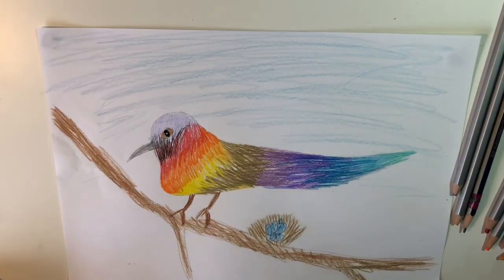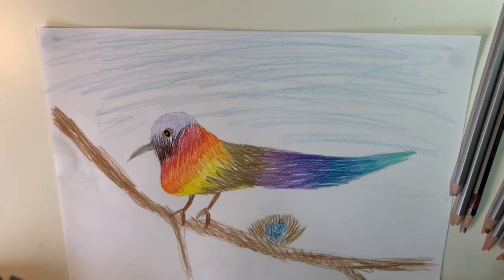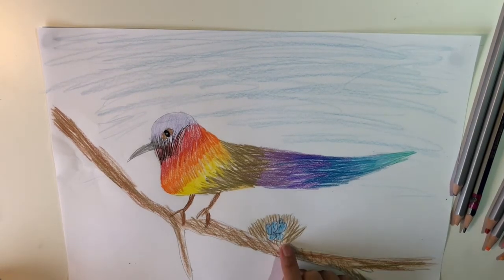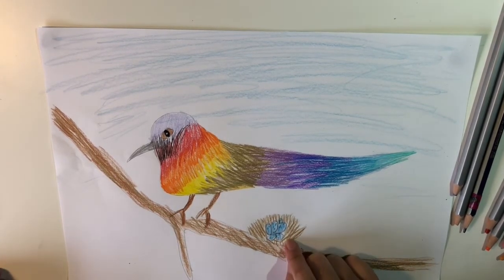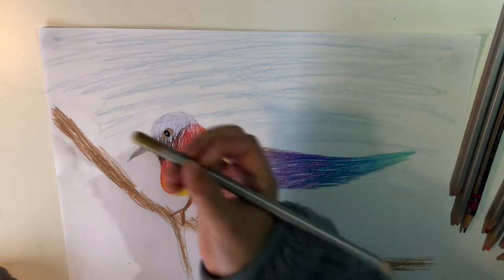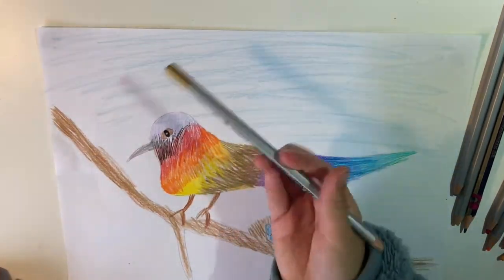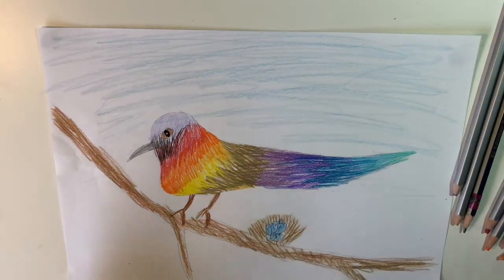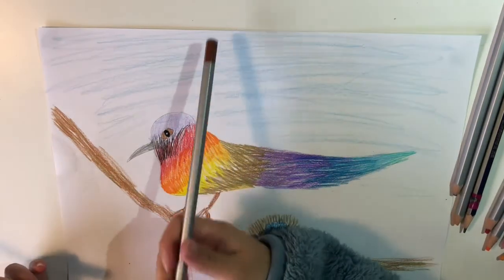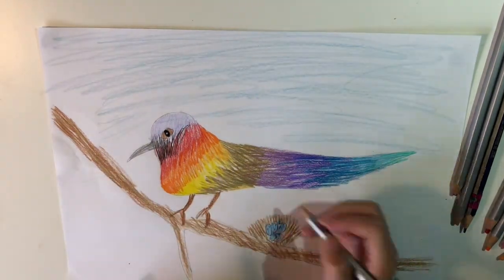Okay, so as you see, I finished my coloring. For the nest, you first need a gold, kind of goldish pencil, and just a brown to overlap it.